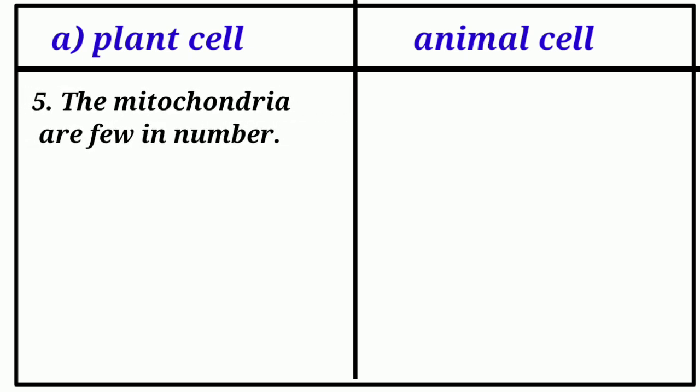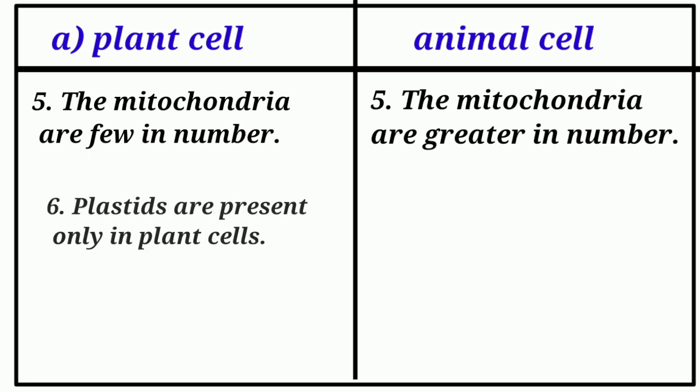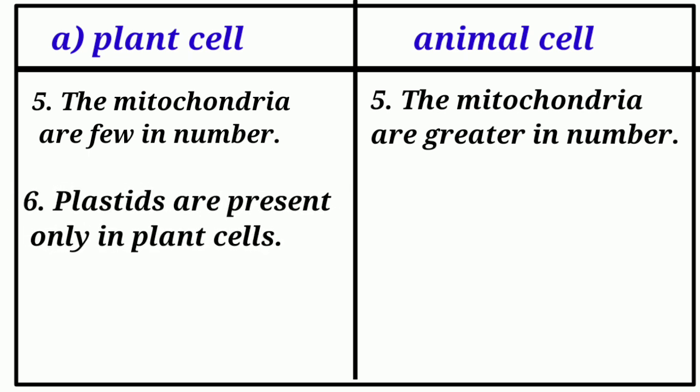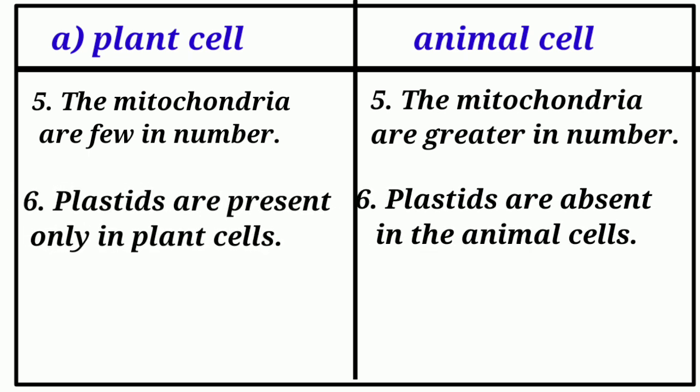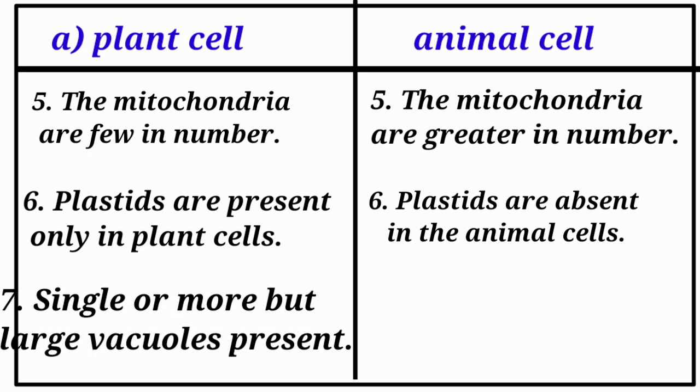Plant cells: The mitochondria are few in number. Animal cells: The mitochondria are greater in number. Plastids are present only in plant cells. Plastids are absent in the animal cells.